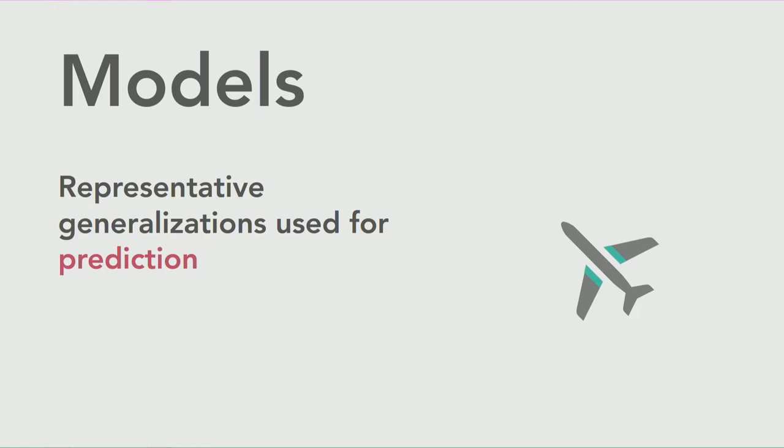We use models for all sorts of things in the world. We have a model airplane; you can think of a role model as a useful generalization that we might follow the path of, or a supermodel — a very realistic generalization of reality. Some models are more useful than others.